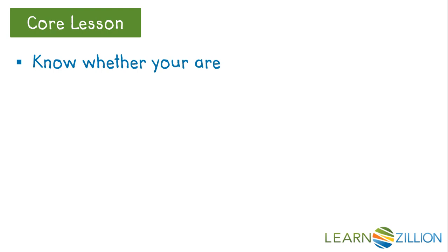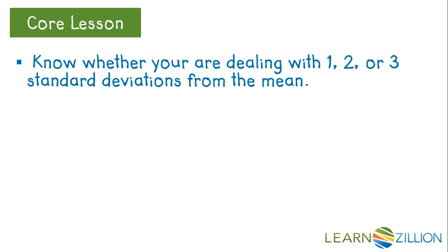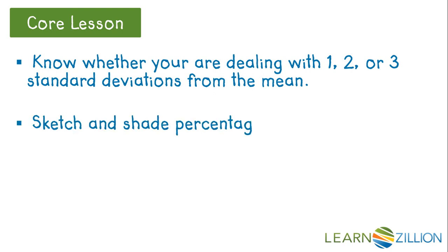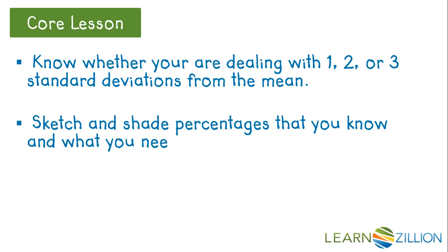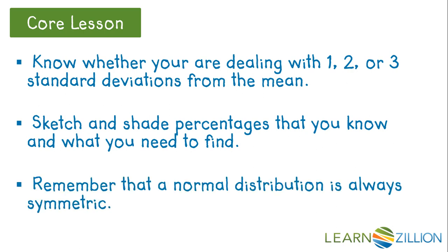Here are some tips that might be helpful when trying to extend the empirical rule. First, know whether the values in question are 1, 2, or 3 standard deviations away from the mean. Second, it might be helpful to have a visual of the normal curve — sketch and shade the percentages you know, then highlight the areas you still need to find. Finally, remember that a normal distribution is always symmetric.